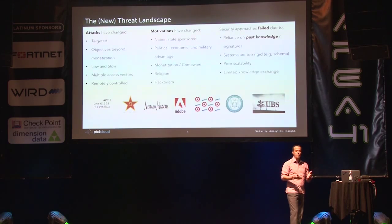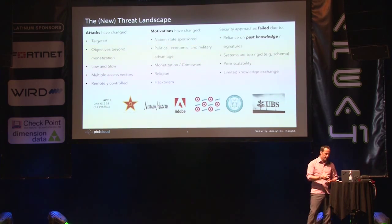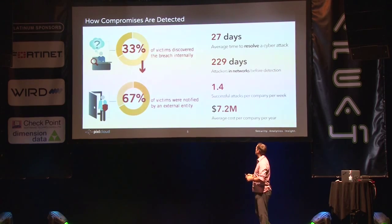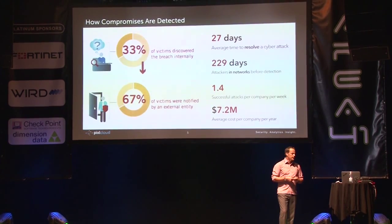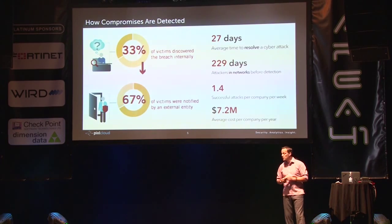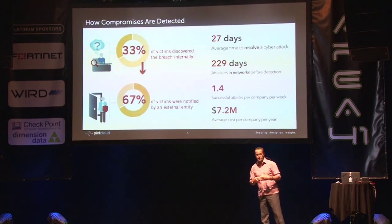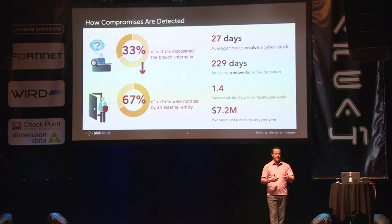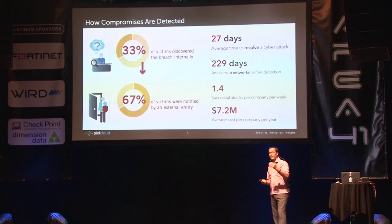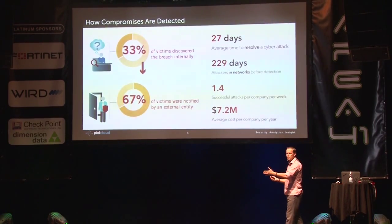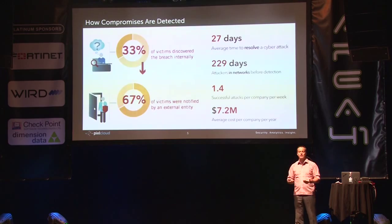Network-based intrusion detection systems are probably not the way you find tomorrow's latest attack. Looking at some numbers — this is really frightening. From the Mandiant report, 33% of breaches at companies were detected internally, but two-thirds of all attacks were reported by outsiders, maybe through a threat feed or someone calling in saying 'we're getting attacked by your machines.' That is really frightening — we're doing something wrong with cybersecurity if we can't detect our own attacks internally.